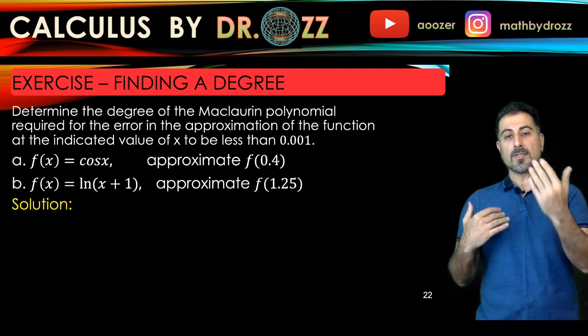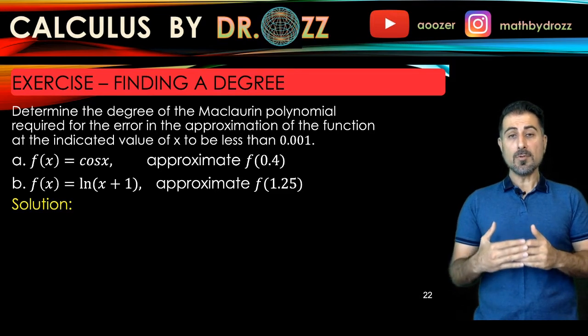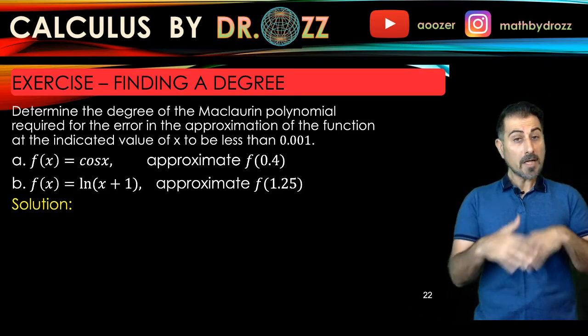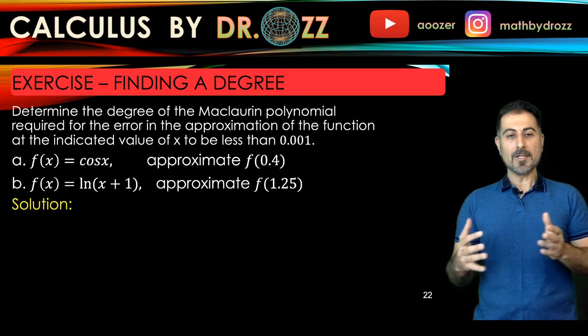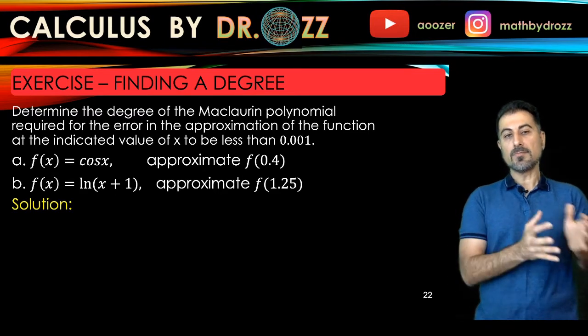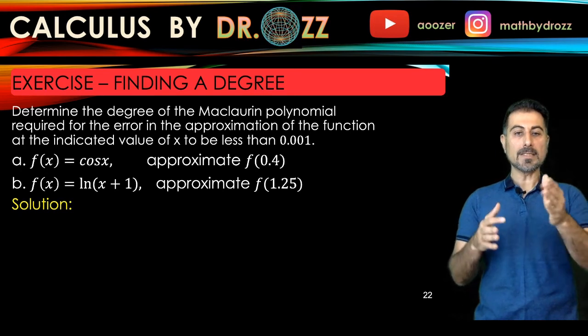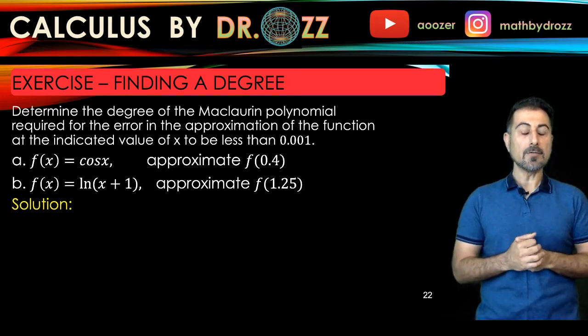So this question is asking you to find the minimum number of terms you should retain in the Maclaurin expansion. In other words, we're trying to find a degree. So are you going to keep two terms, three terms, four terms, 10 terms in the Maclaurin expansion to make your estimation for cosine 0.4 or ln 2.25.